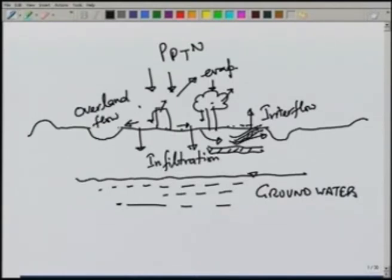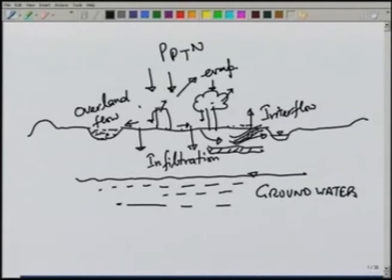The part of precipitation which does not evaporate or infiltrate runs on the land — this is known as overland flow. Part of this overland flow will go into lakes and depressions, and once those are filled, the rest runs off to the stream. What we look at today is how much water runs off into the stream from a particular precipitation event.